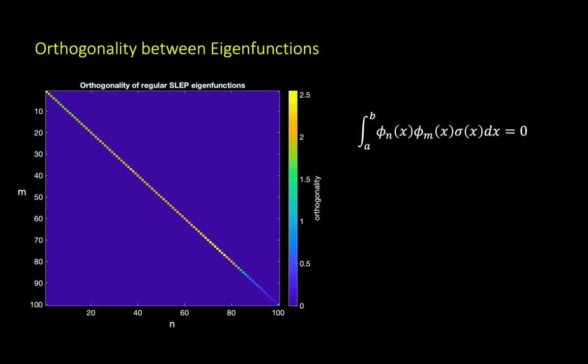This figure shows the orthogonality of the eigenfunctions that were obtained by solving the SLEP numerically. We learned from the Sturm-Liouville theorem that the different eigenfunctions are orthogonal, meaning that their dot product is zero, as shown by the equation on the right. We can observe from the figure that the dot product between m's and n's eigenfunctions is zero when m does not equal to n, while the dot product is positive when m equals to n, resulting in this diagonal band across the figure.